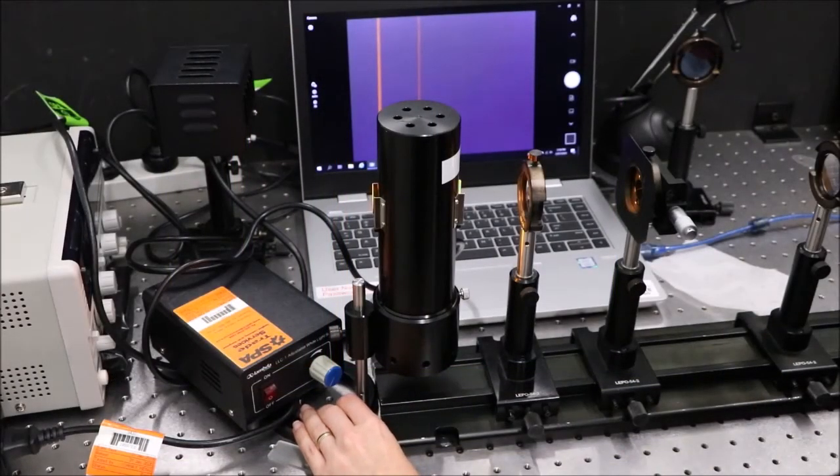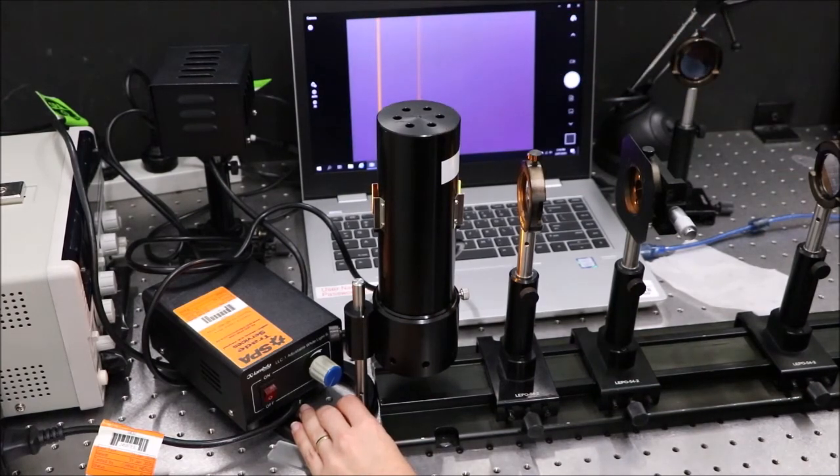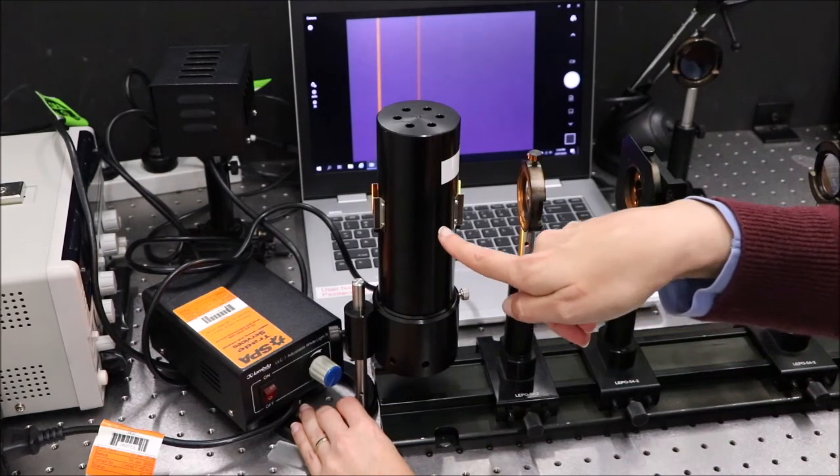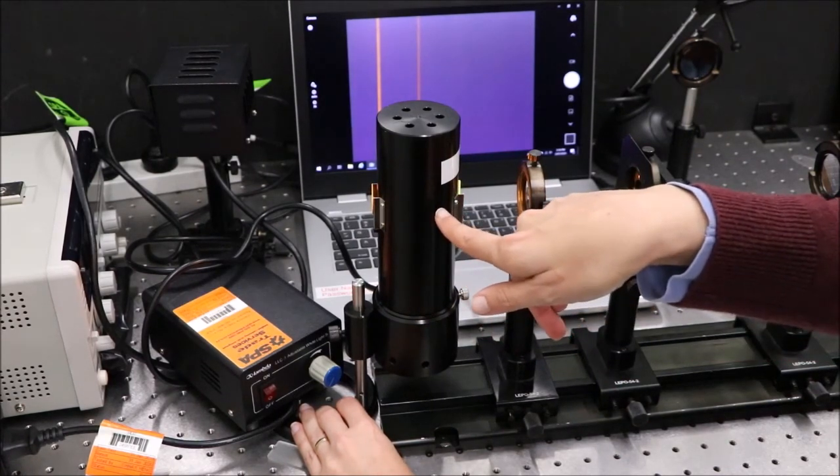Now we replace the white light source with the sodium lamp. We need to move it forward to keep the distance between the lamp and the lens the same that we had for the white light.